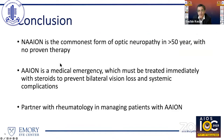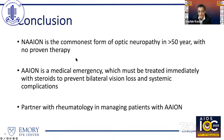In conclusion: non-arteritic anterior ischemic optic neuropathy is the commonest form of optic neuropathy in adults above 50 years, and we do not have any proven therapy at this point. The arteritic variety of AION is a medical emergency that must be treated immediately with steroids — in my clinic, patients do not leave without me watching 70 milligrams of prednisone go down their throat, because waiting in the ER risks fellow eye involvement. Partner with a rheumatologist to manage patients with arteritic anterior ischemic optic neuropathy. Thank you.